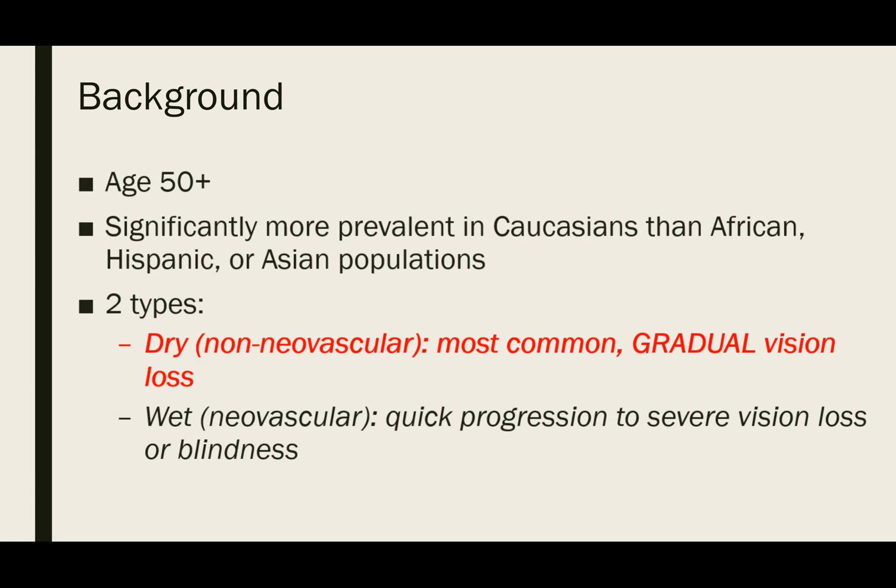Dry AMD is the most common type, affecting 90 percent of people who develop this condition and causes gradual vision loss. Wet AMD, on the other hand, is less common and progresses more quickly to cause severe vision loss or blindness. It is possible to start with dry macular degeneration and develop the wet type. Since the focus of this presentation is chronic vision loss, we will focus on dry AMD.